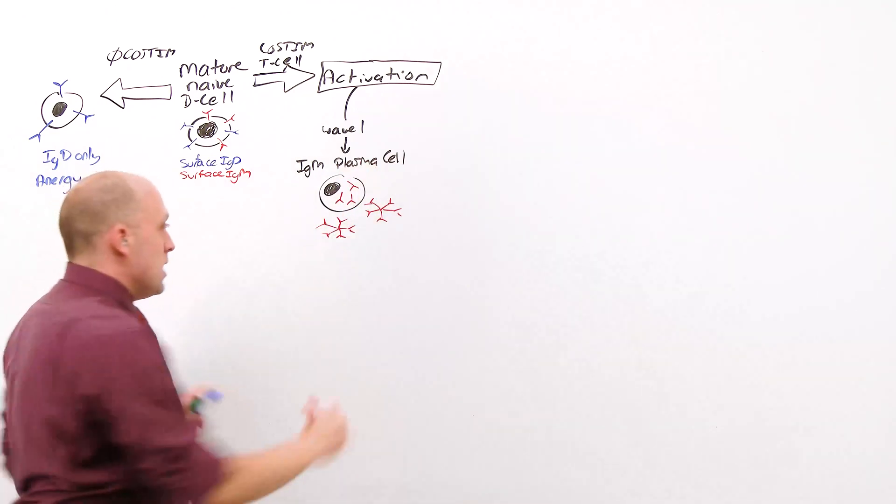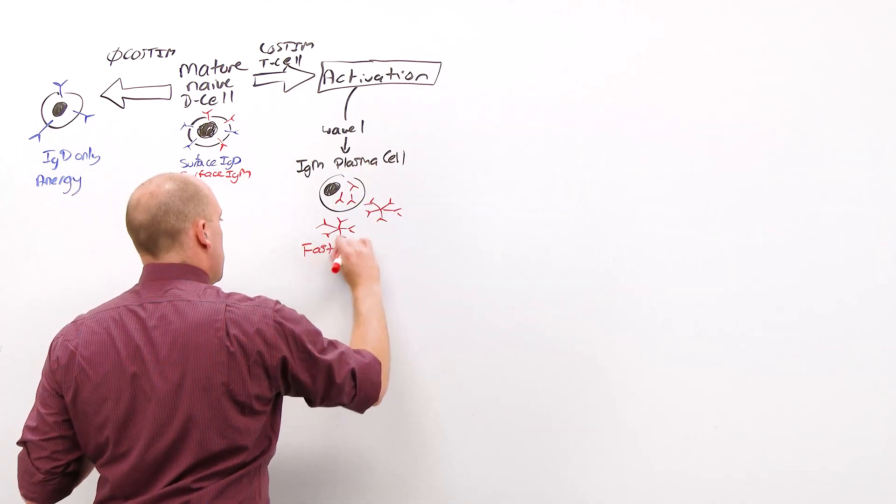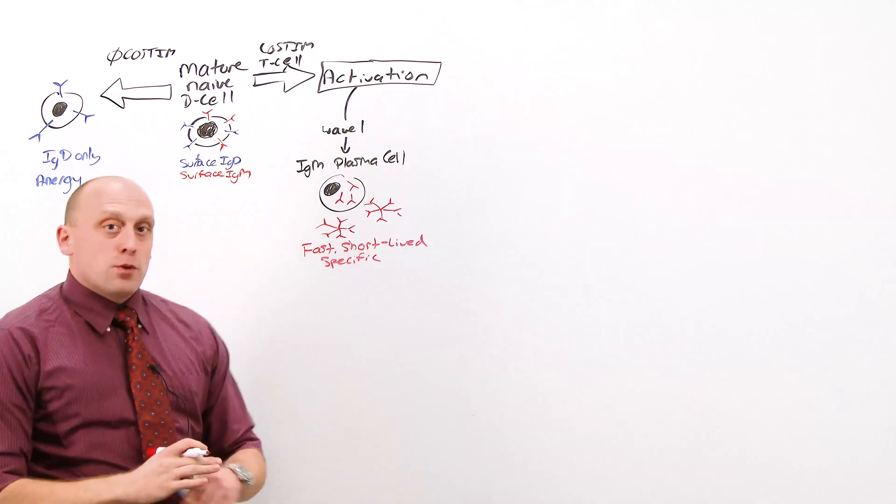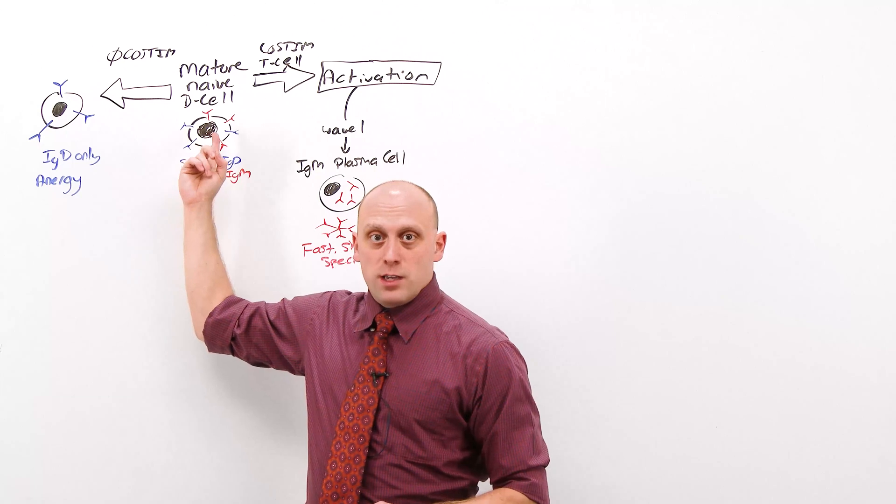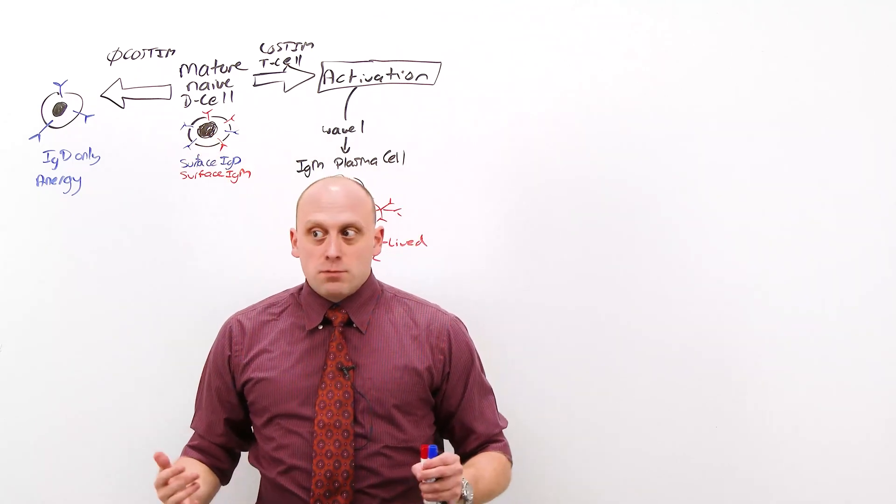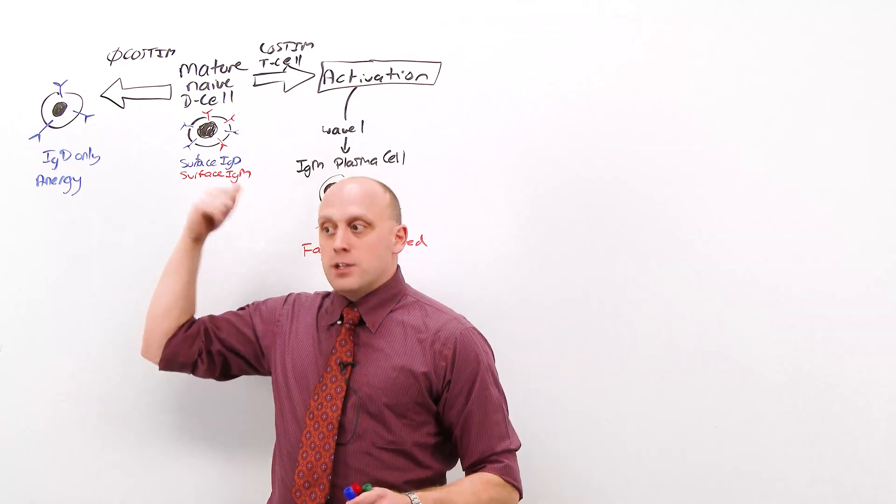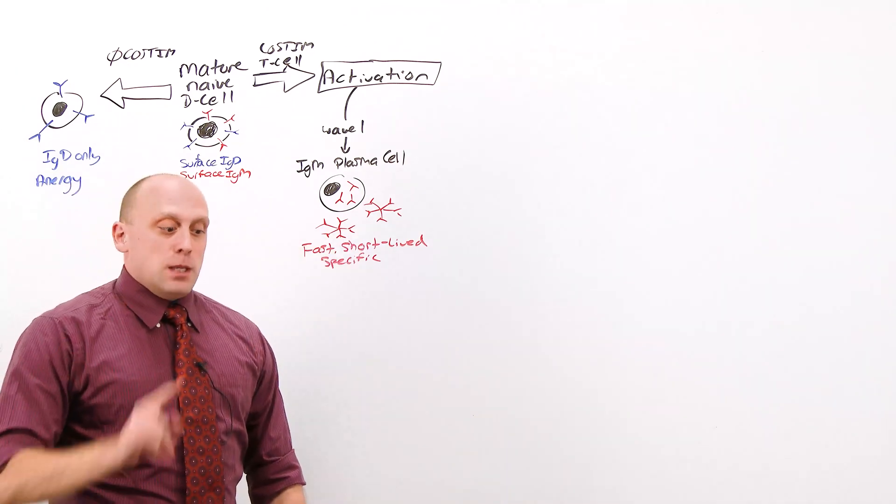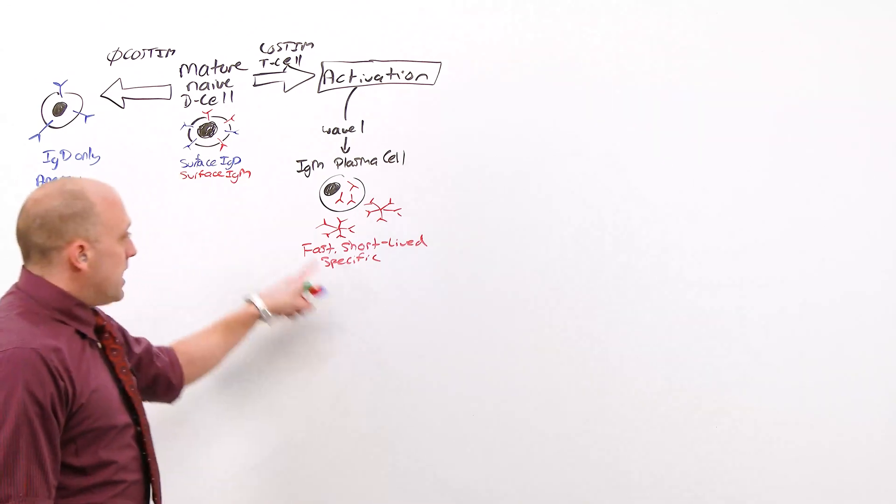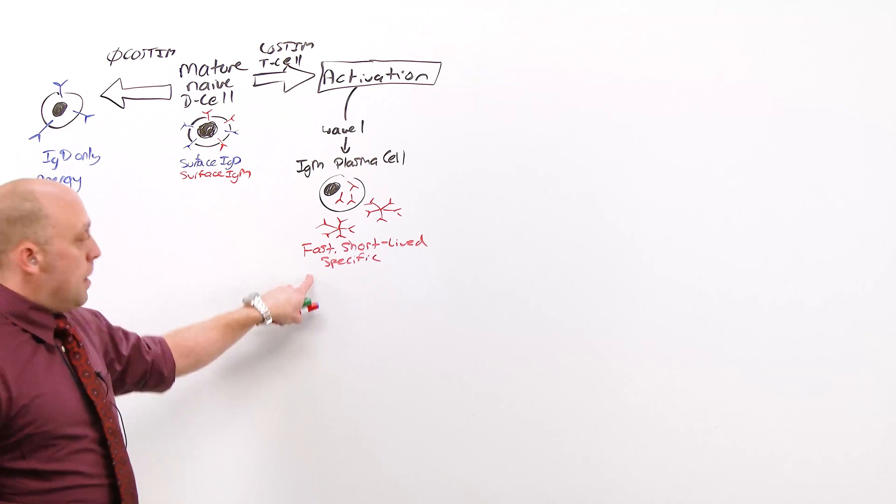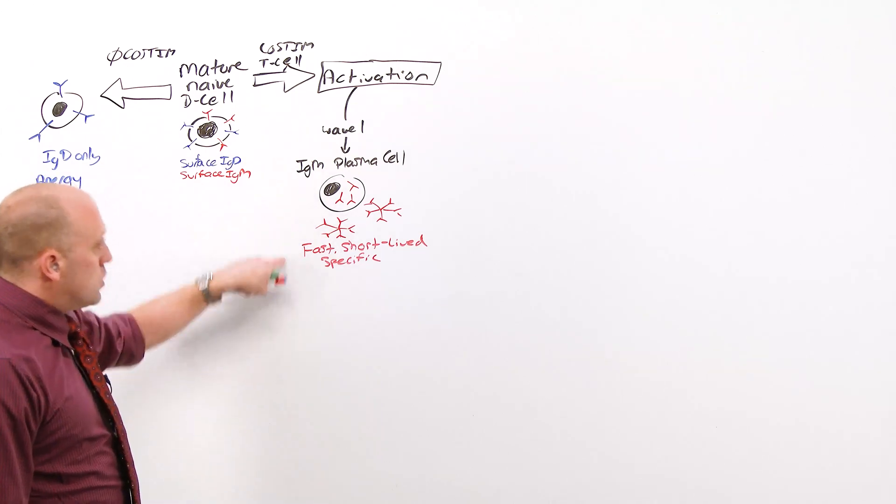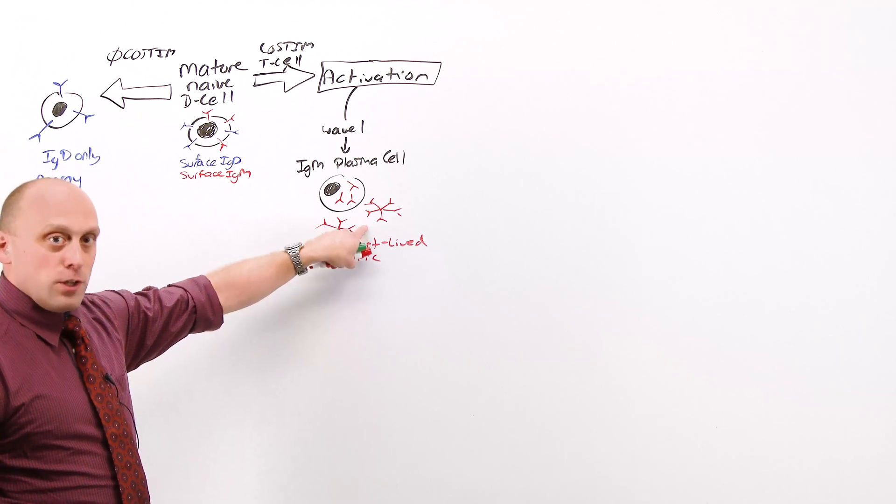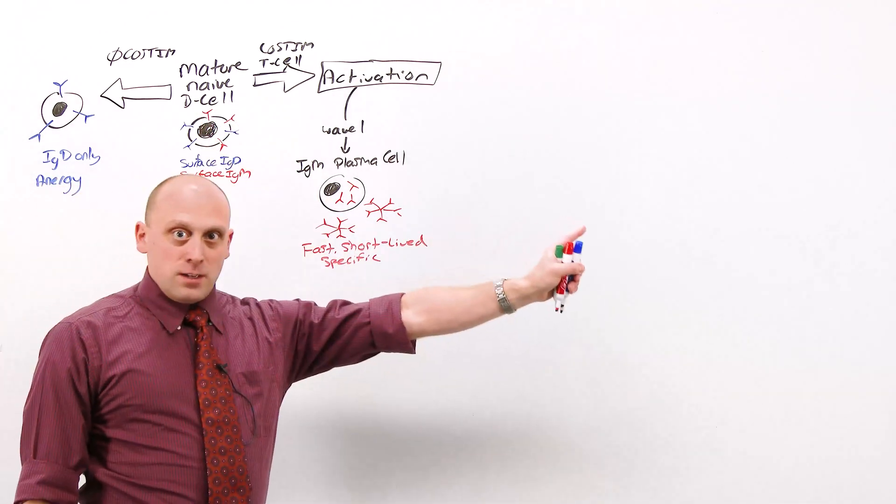This creates the IgM antibody that we know circulates as a pentamer. We need this immediate response. This is fast and although it's short-lived, it's specific for the antigen. Now remember, we made randomly this IgM here for this mature naive B-cell. We did the VDJ and the VD rearrangements. We just guessed. And now we have an antigen it recognizes. So if we send out IgM and it's a pentamer form, it's at least going to be able to find that antigen and help out. It's not as fast as innate and it's certainly more specific, but this IgM plasma cell allows the adaptive immune response to hold over with a weaker affinity, not as good, more general antibody, while the second wave from activation gets ready.